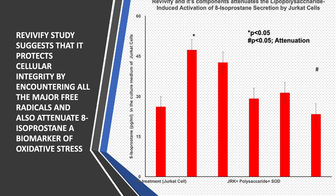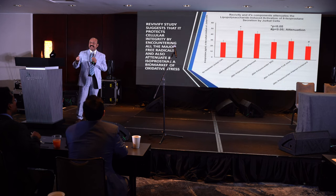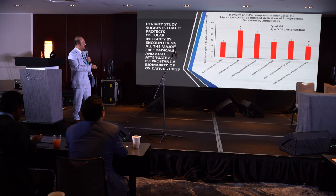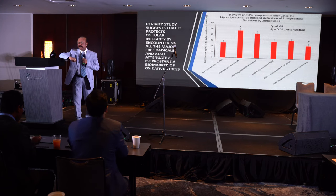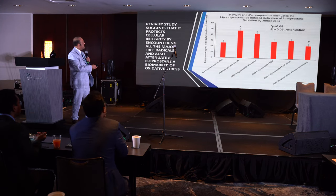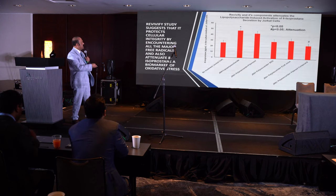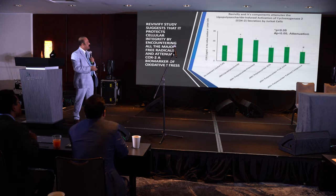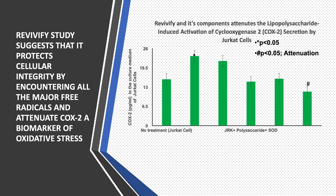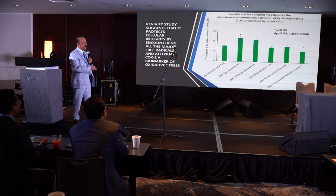We used lipopolysaccharide (LPS) for induction to generate oxidative stress, and then we used different concentrations of the patented compound — that is the BB5 gel. We found that the BB5 gel 100% attenuated the LPS-induced oxidative stress marker 8-isoprostane. In the same way, COX-2 was also attenuated. We analyzed inflammatory markers — IFN-alpha, IL-6, TGF-beta, and TNF-alpha — and all these oxidative and anti-inflammatory biomarkers induced by LPS are attenuated by the BB5 gel.